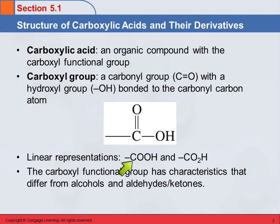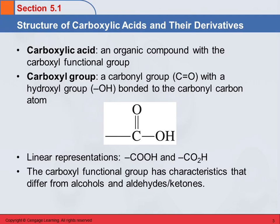Ways to represent this linearly are COOH and CO2H. So if you see something like that, it's a carboxylic acid. This carbonyl group is what we saw in aldehydes and ketones, and the hydroxyl group is what we saw in alcohols. You might think a carboxylic acid must have properties similar to both of those categories, but no — they're different from both alcohols and aldehydes/ketones. It is its own unique group with its own properties based on that functional group.